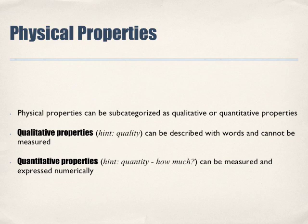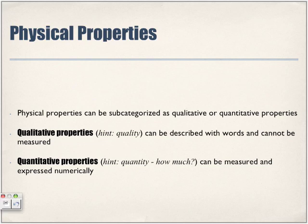Physical properties are subcategorized as qualitative or quantitative. Qualitative — think of it in terms of the quality of the item. Looking at something qualitatively, we're describing it in words but not measuring it. Quantitative — think of quantity, the amount, how much. We're looking at conditions in which we can actually measure something and express it numerically.